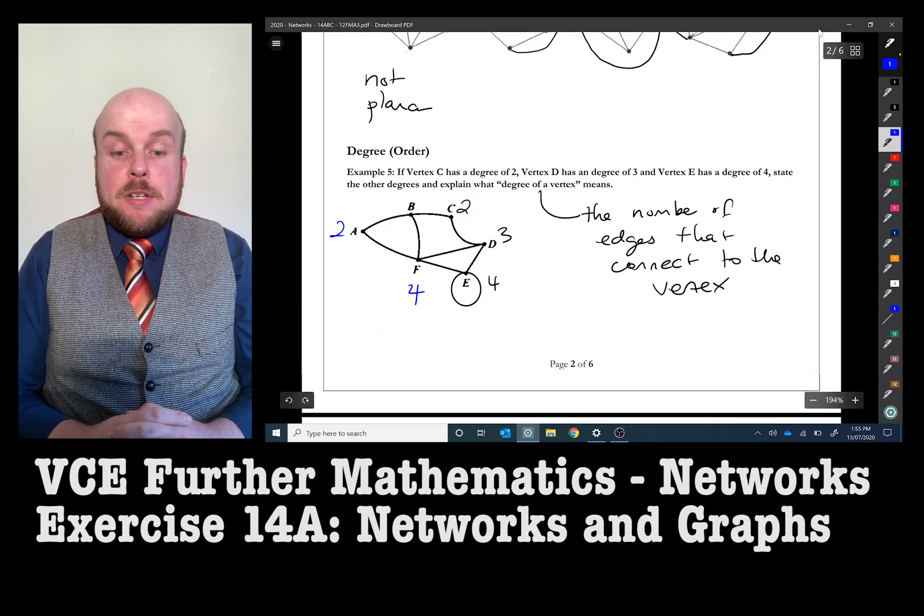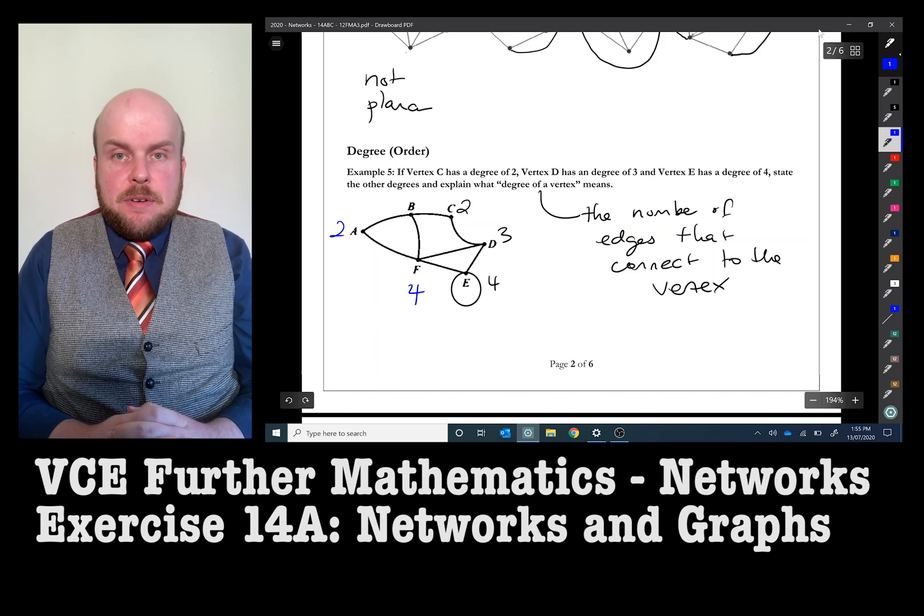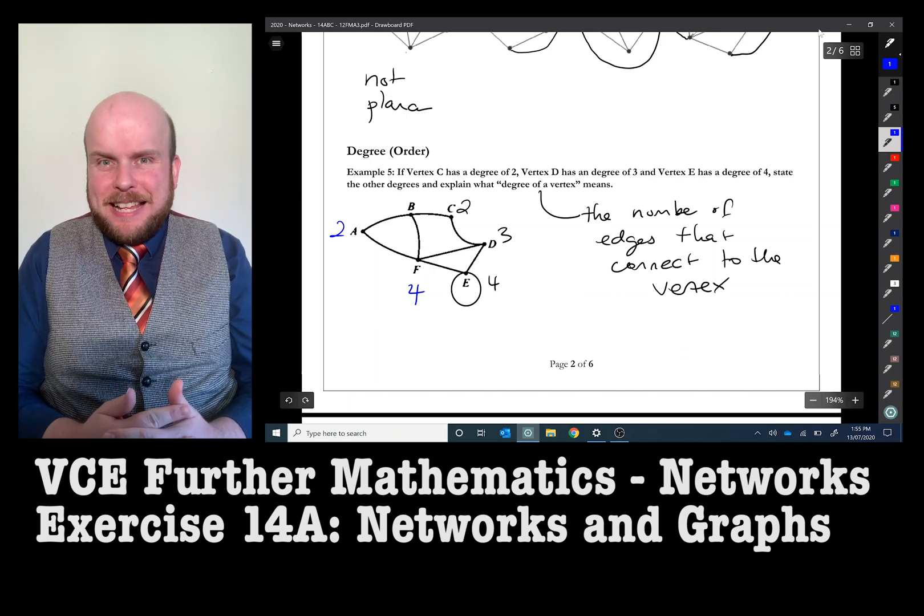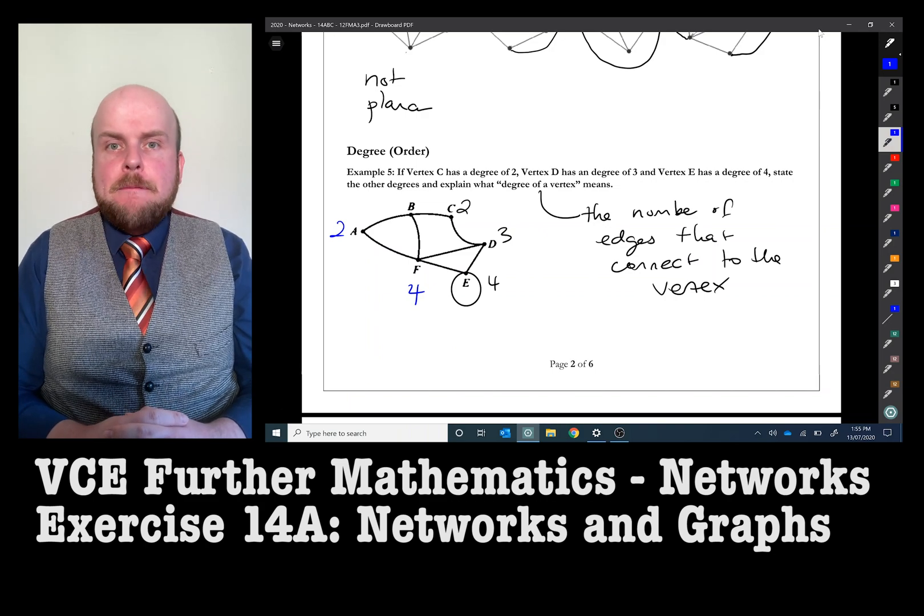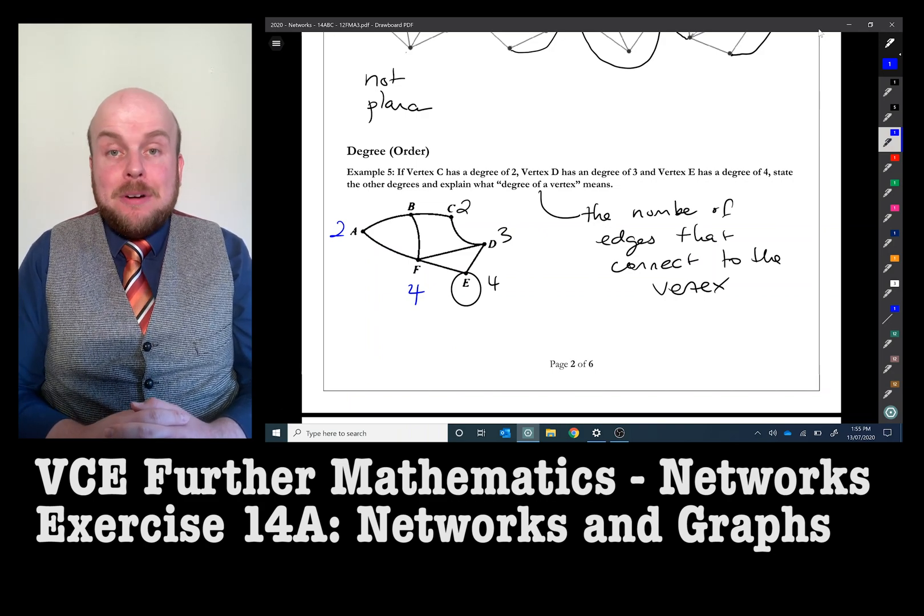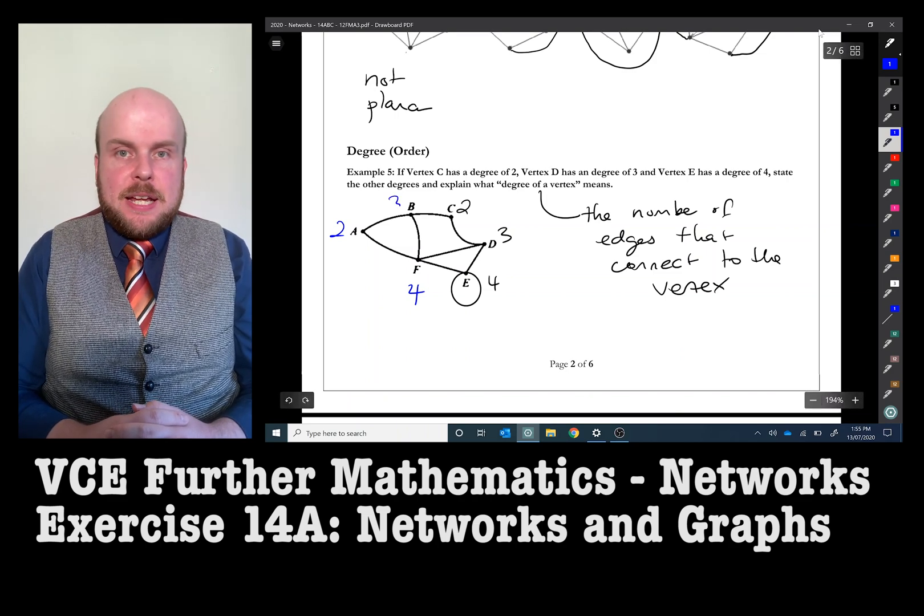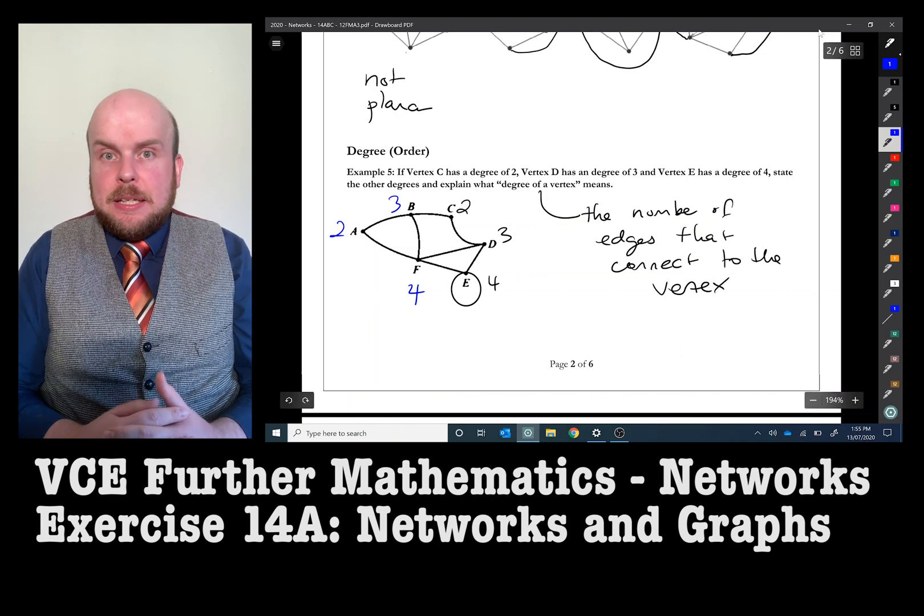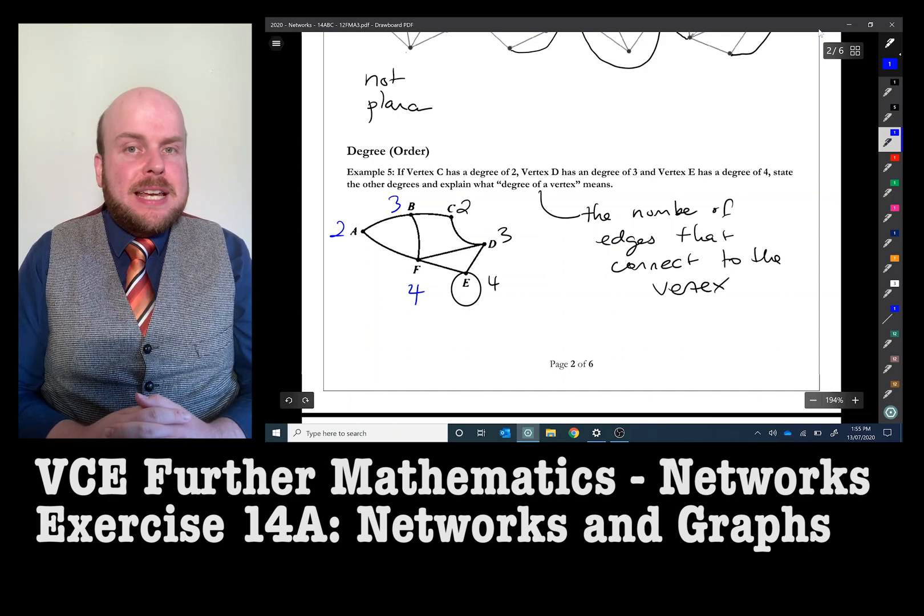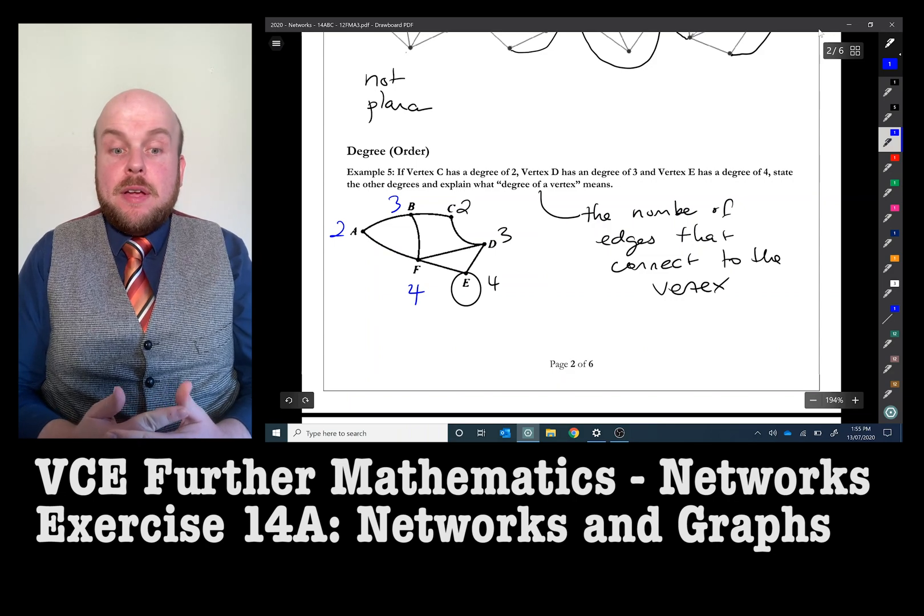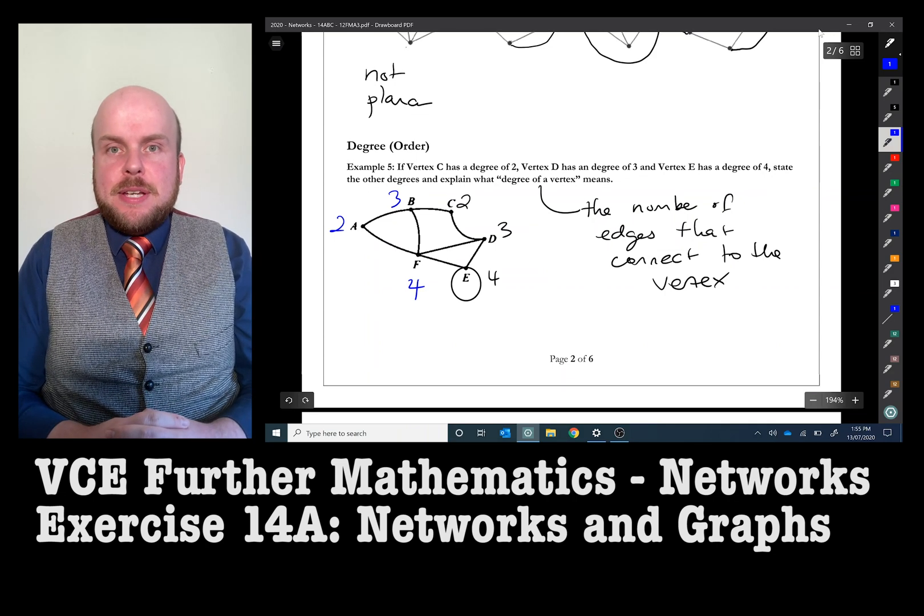Sometimes, you'll hear of networks being described as having an even degree or an odd degree. If it has an odd degree, or simply, sometimes it just said that those vertices are odd, it means that they have an odd numbered amount of entranceways to that vertex. Similarly, if it's even, if it says it's an even degree, or simply that that vertex is even, it has an even number of entranceways to that vertex.